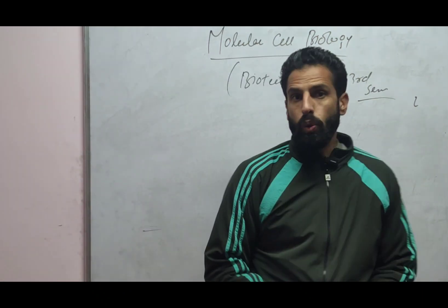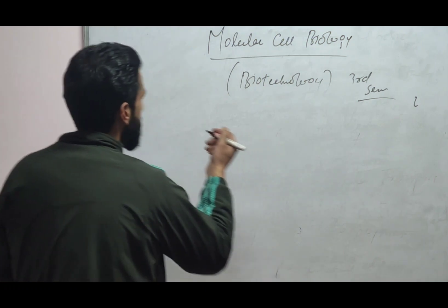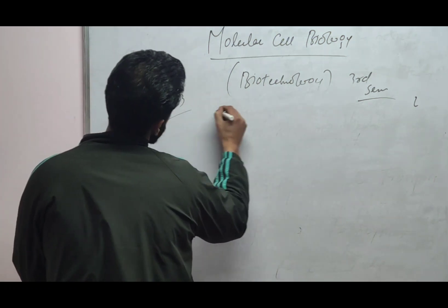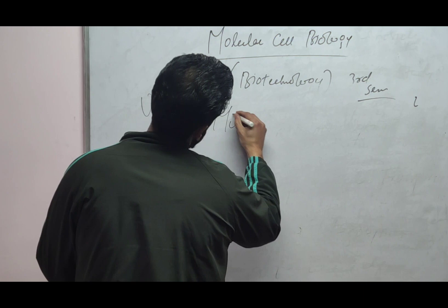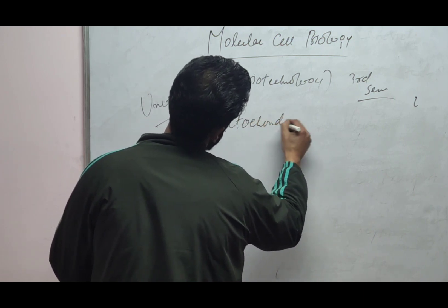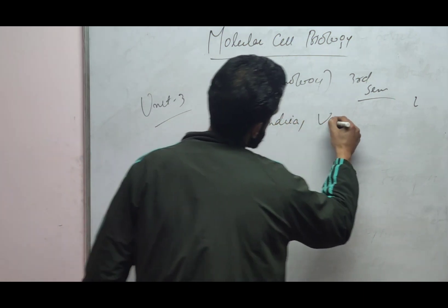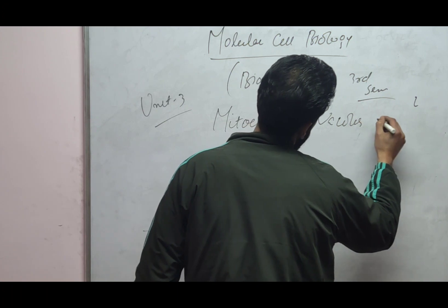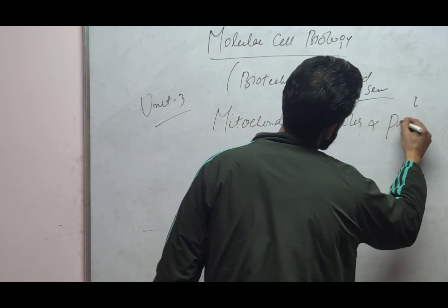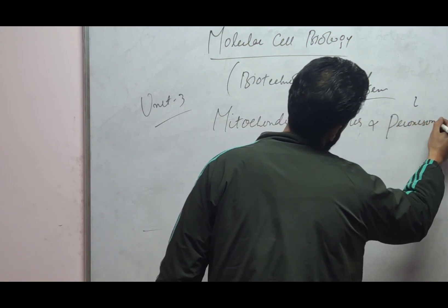Third unit we will see which questions are important. Third unit, direct your unit third will be mitochondria, powerhouse of cell, vacuoles, and peroxisomes.